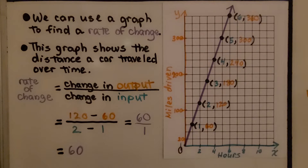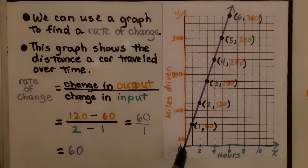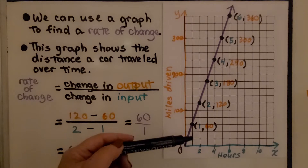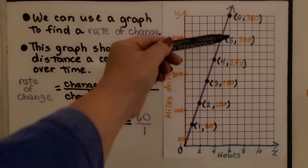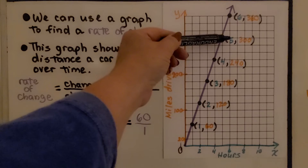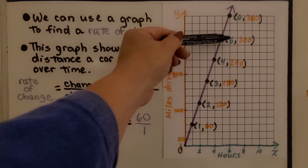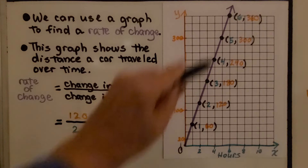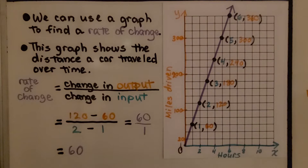If the relationship is proportional, there will be a constant rate of change, and we can use any two ordered pairs to find the rate of change. The line goes through the origin at (0, 0) and is a straight line. We could choose the second point with x = 5 and y = 300. It has a constant rate of change, so we can use any sets of ordered pairs.